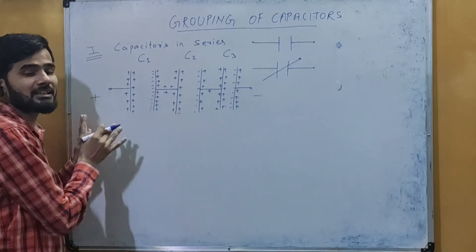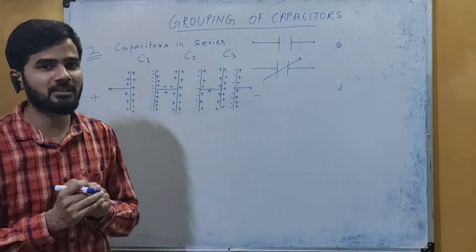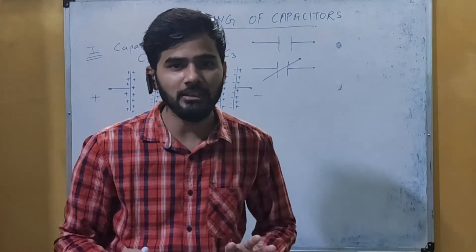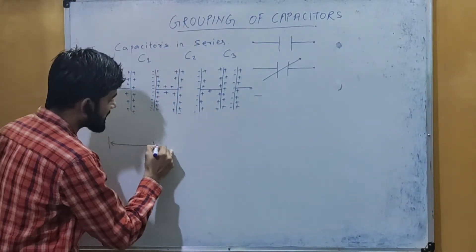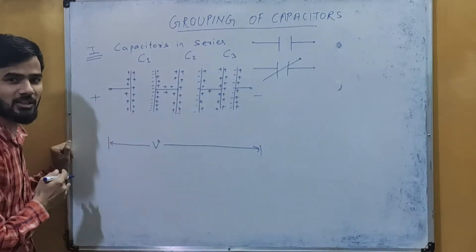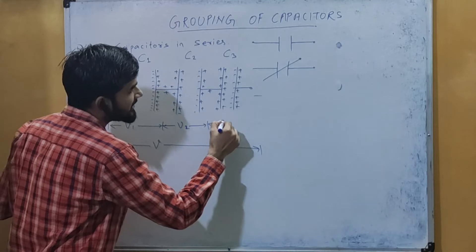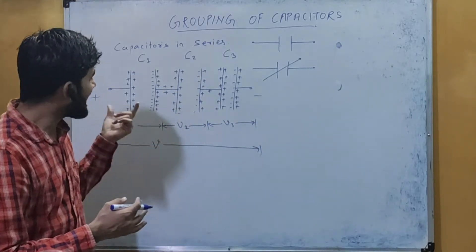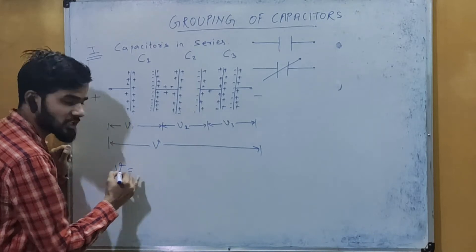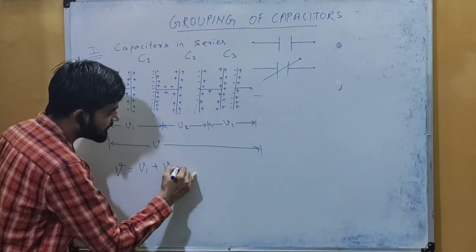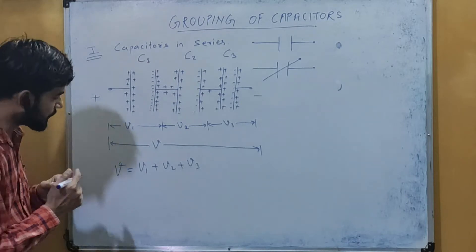Whatever charge we give to the first capacitor, the same charge is given to the second and to the third capacitor. So in series, the charge remains the same on all capacitors. However, the potential gets divided: if a total potential of V volts is applied across the combination, then V = V1 + V2 + V3, because the total potential is divided across the three capacitors.